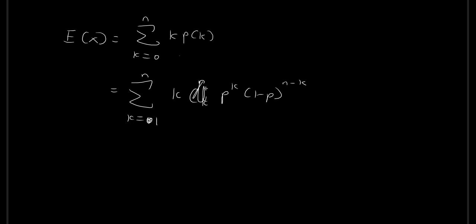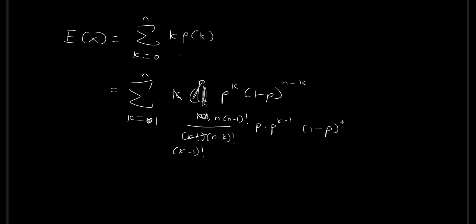Furthermore, I'm going to write this out in full form. So instead of n choose k, we write n factorial divided by k factorial divided by n minus k factorial. You can see that the k out front can merge with the k factorial to give k minus 1 factorial. I'm also going to write n factorial as n times n minus 1 factorial, and p to the power of k as p multiplied by p to the power of k minus 1. In a moment, you'll see why pulling out these terms will be useful.